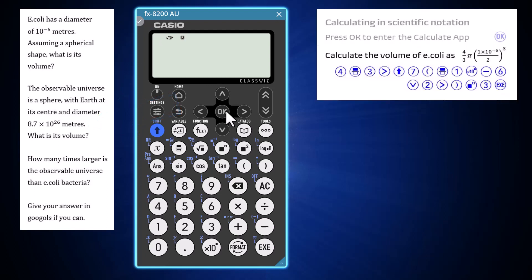The calculation for the volume of E. coli can be entered as shown, based on the formula for the volume of a sphere. Enter the diameter in scientific notation as 1 times 10 to the minus 6 by pressing 1 in the scientific notation key and then minus 6.